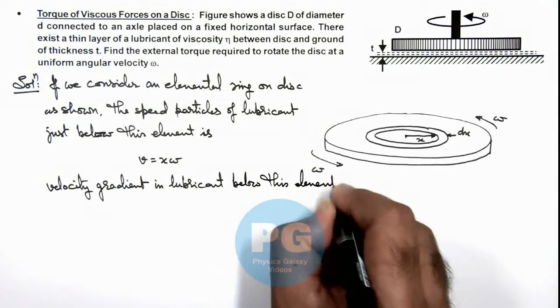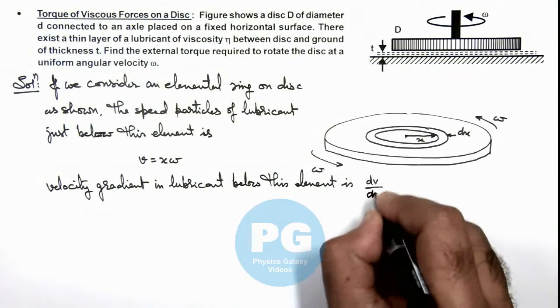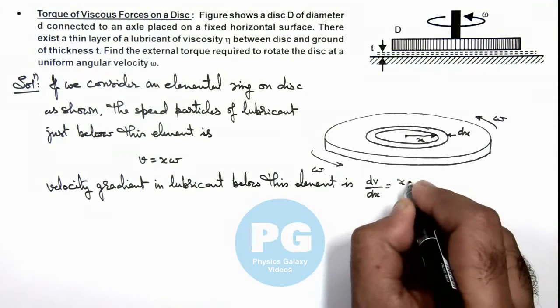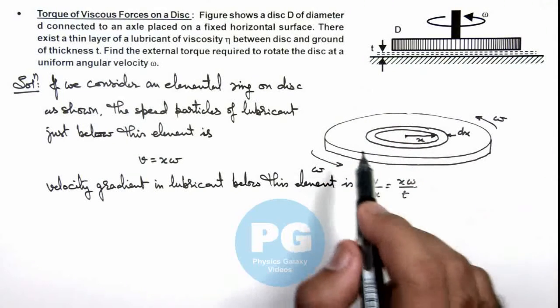This we can write as dv/dx and that should be written as x omega divided by t, as t is the thickness of the lubricant layer.